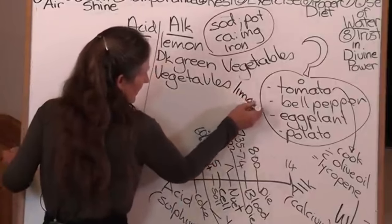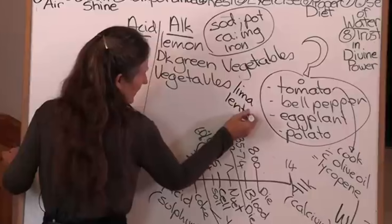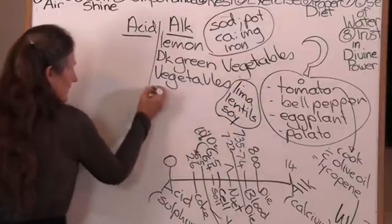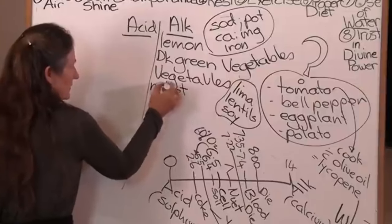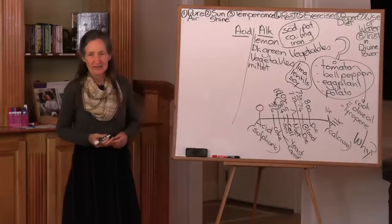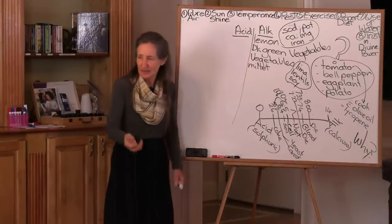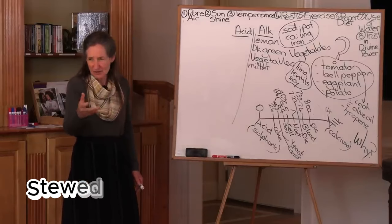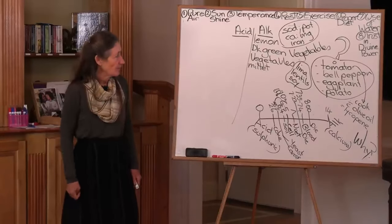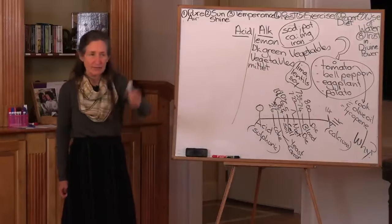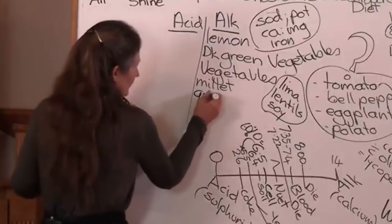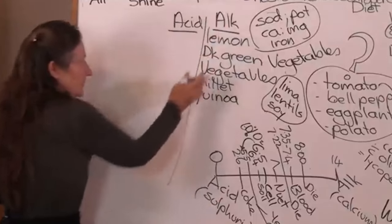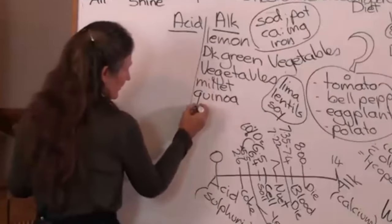Lima beans and lentils and soy are the three alkaline forming legumes. For your grains, the millet is alkaline. We had millet this morning. It's a delicious grain. I'm sure you can understand when I said it needs to be dressed. It's basically a bland grain, but it's very nice with the stewed apple and the pear cream and the sprinkles on top. Oh, it's also very nice if you have it with savory, your lentils. Quinoa. I think we'll be having quinoa at another breakfast time. These are alkaline grains, but they're also gluten-free grains. So that's made them very popular.